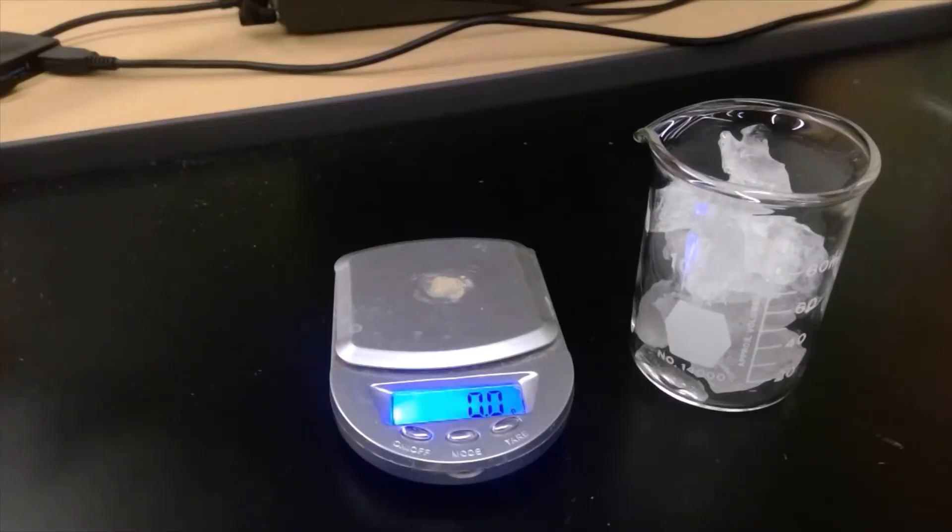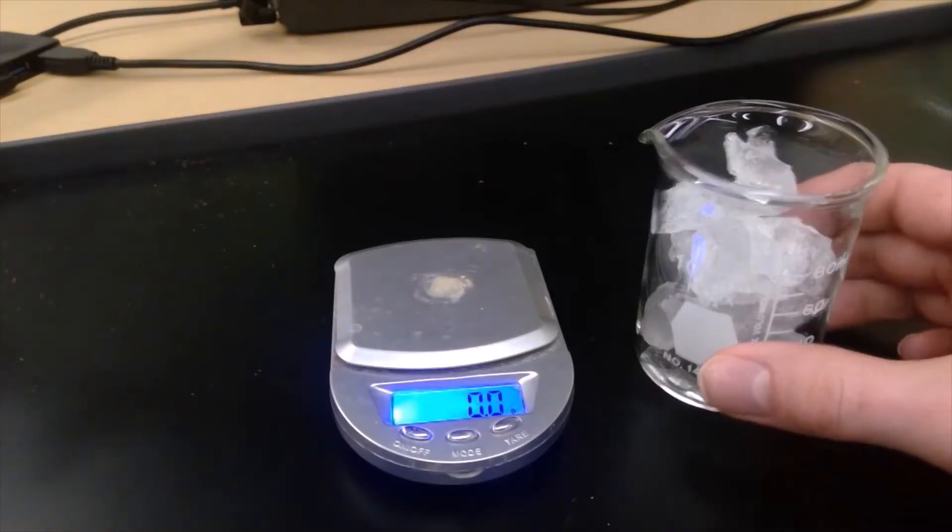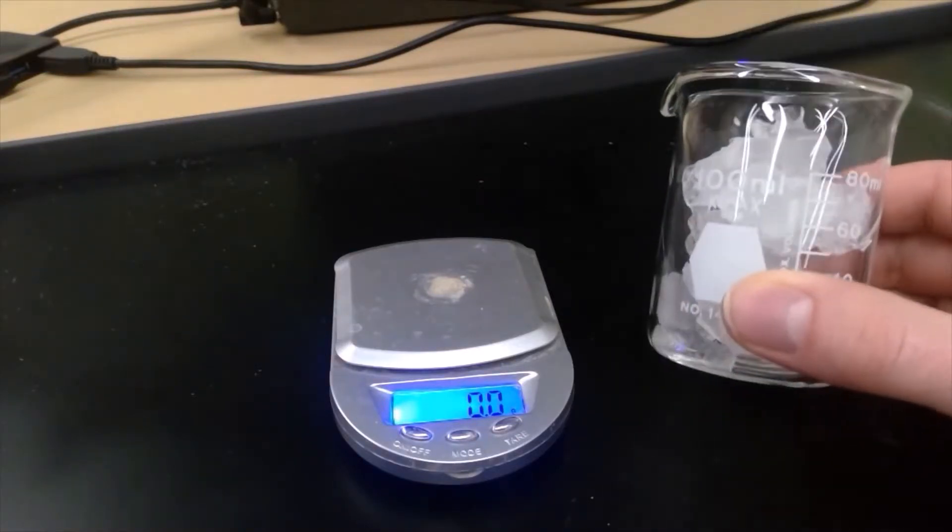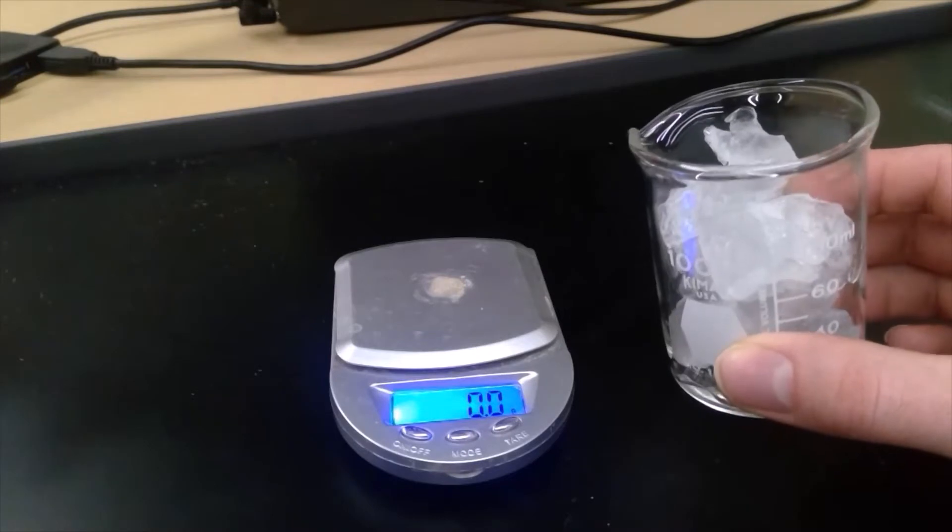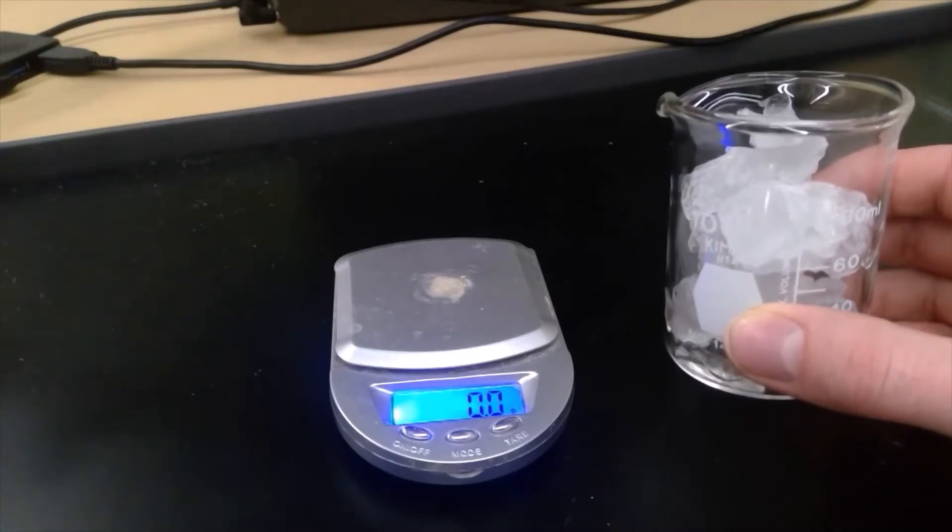Measurement number one: melting ice. What do you observe about the ice and the beaker? Let's get the mass before.